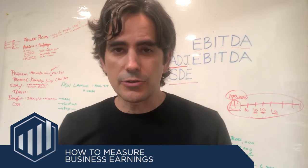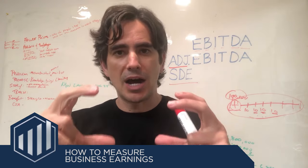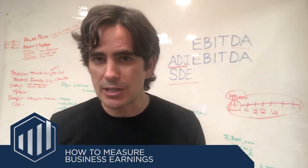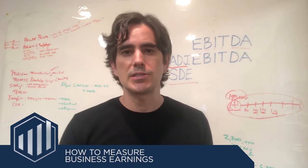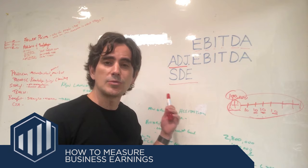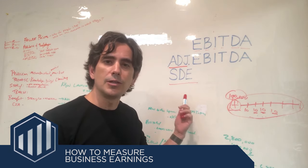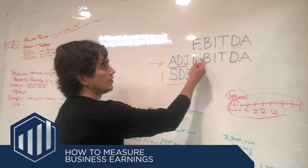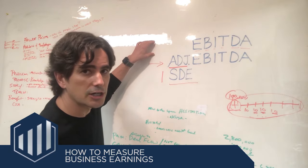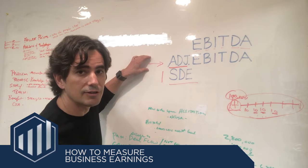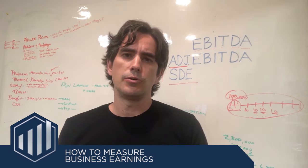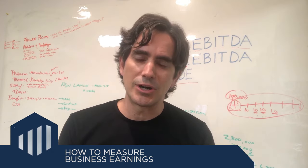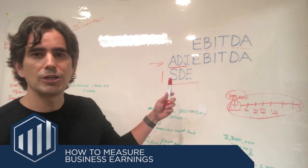Below that threshold, the market uses Seller Discretionary Earnings, or SDE — sometimes called Discretionary Earnings or DE. The concept is: how much money is available in this business to its owner? This includes salary you can take out, money you can reinvest, and funds used to pay down principal and interest. SDE is the total cash flow available to an owner for all management decisions — whether you operate it yourself or hire a manager, which would convert it closer to an Adjusted EBITDA number.